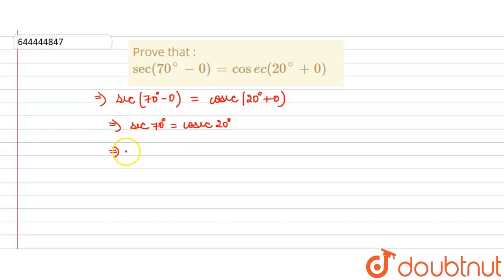Now we will take the left hand side. LHS equals sec of 70 degrees.